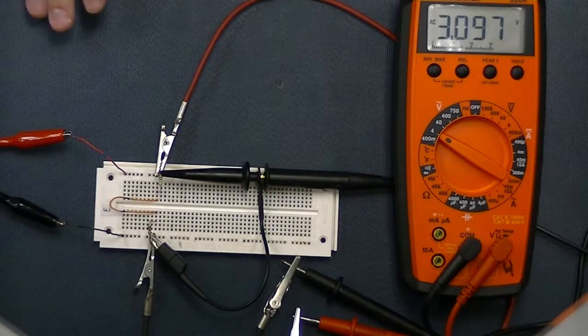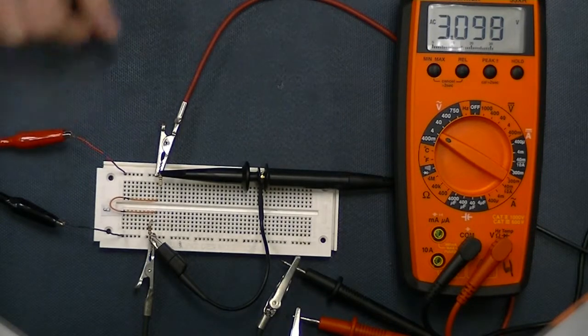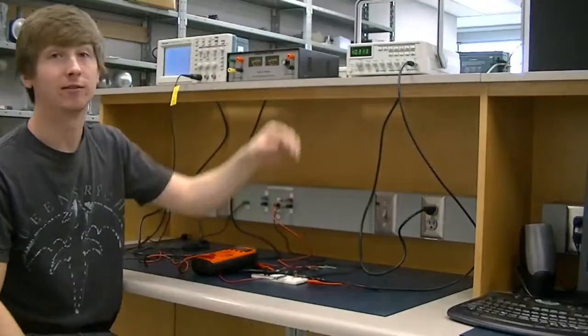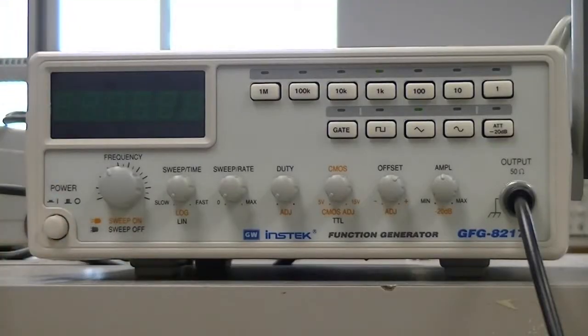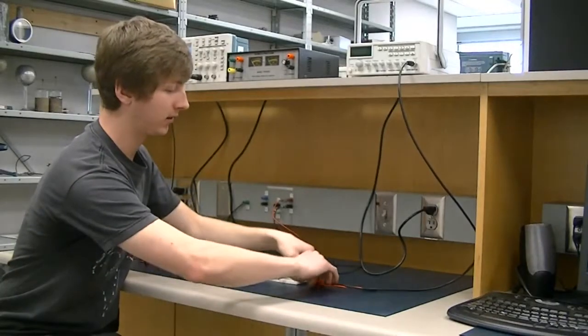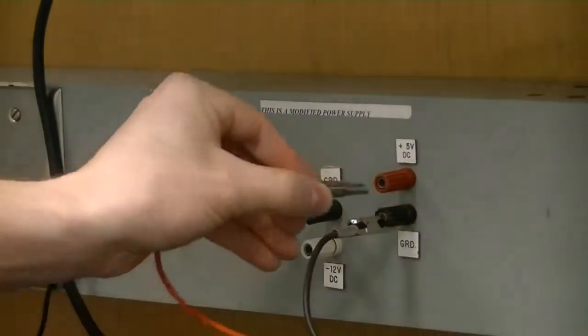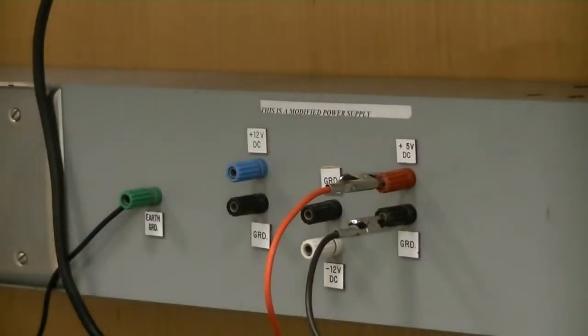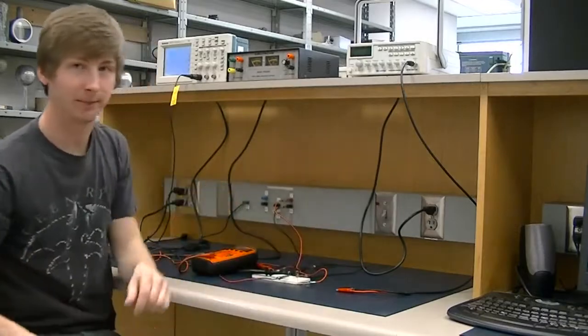Now let's go back to the function generator and throw some DC in instead. So now we can fire off the generator, unhook it from the circuit, and throw some straight DC voltage in to get a reading that way. Just like that.